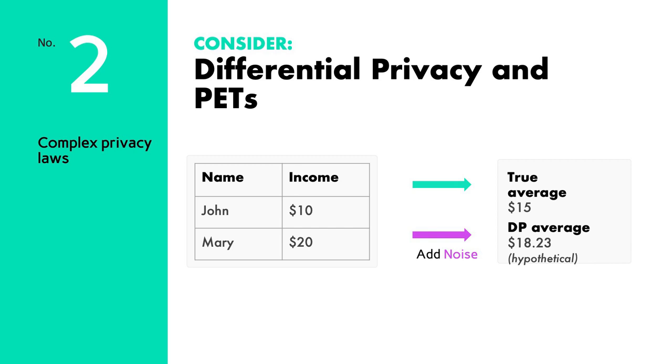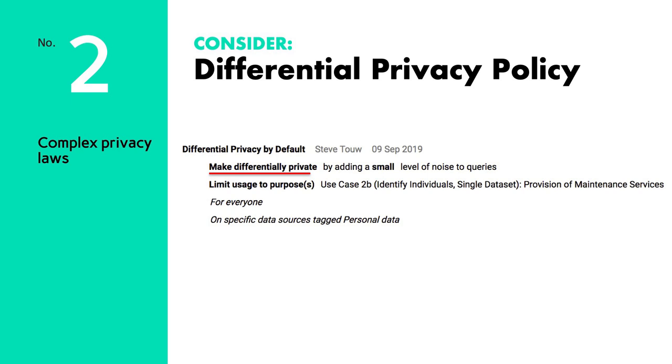One key tool to deal with the scope of personal data is differential privacy and other privacy-enhancing technologies. At its core, differential privacy aggregates data so that individuals or organizations cannot access individual-level data sets, and adds a little noise to make it mathematically difficult to re-identify individuals within that data set. With a policy engine, differential privacy policies can be created without code — previously this required teams of data scientists and software developers. Imagine if a data trust could also use something like this.